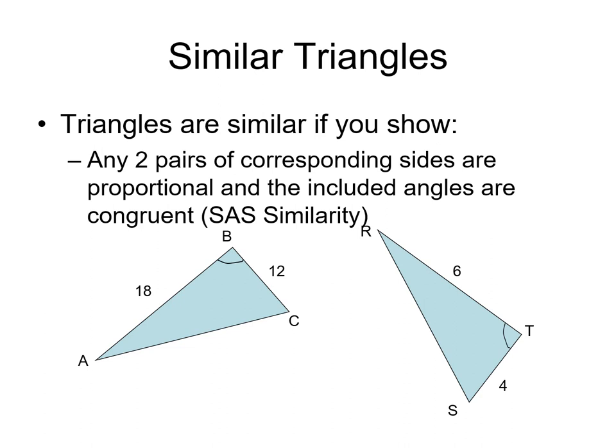Triangles are similar if you show any two pairs of corresponding sides are proportional and the included angles are congruent. This is called SAS similarity.